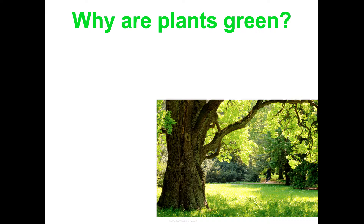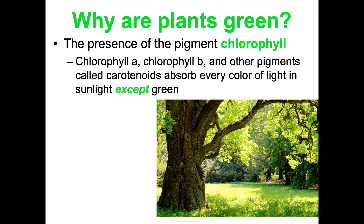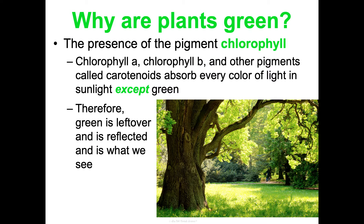A quick side note: why are plants green? They're green because of chlorophyll. Chlorophyll is a pigment that plants have in their thylakoid membrane. There are several types of chlorophyll, plus other pigments called carotenoids. They absorb every color of light from the sun except for green. What's left over is green — green is what gets reflected, and we see what's reflected. So everything not absorbed gets reflected, and green is that reflected color. That's a simplified explanation of why plants are green.